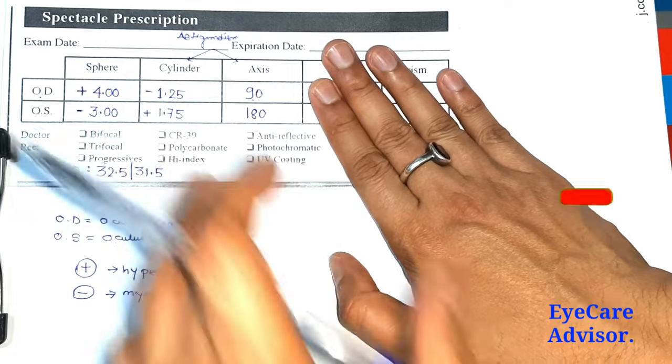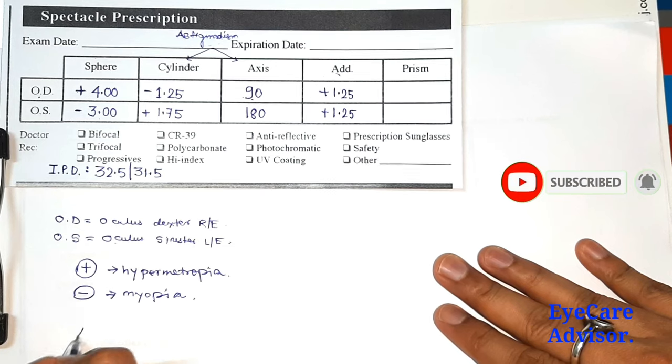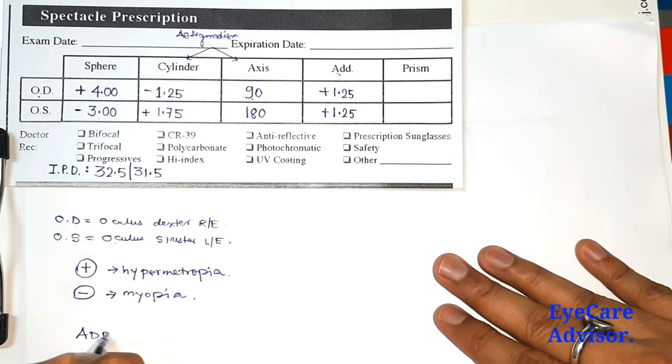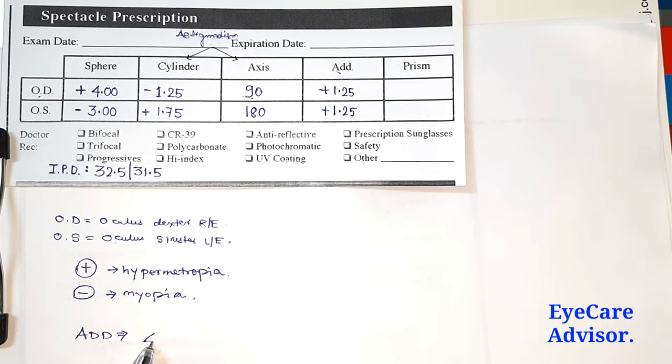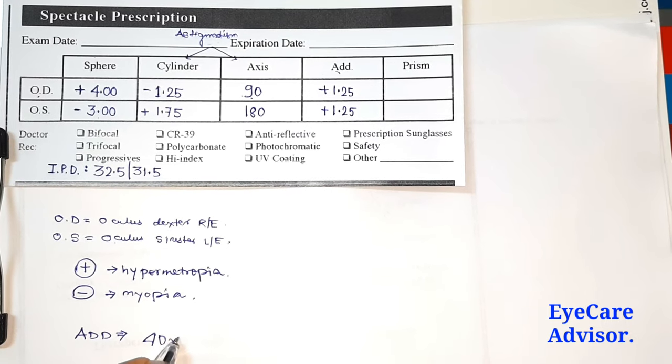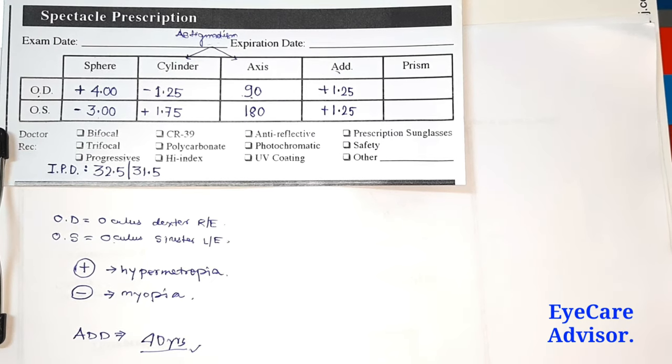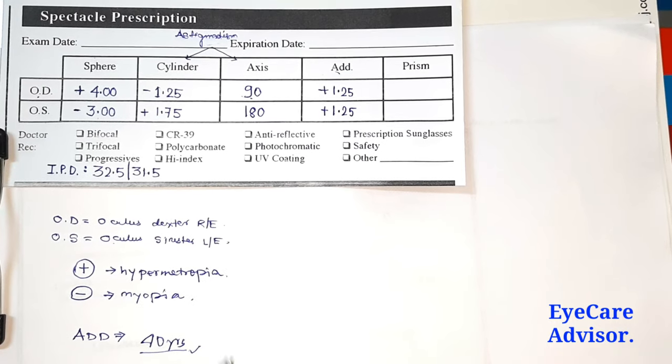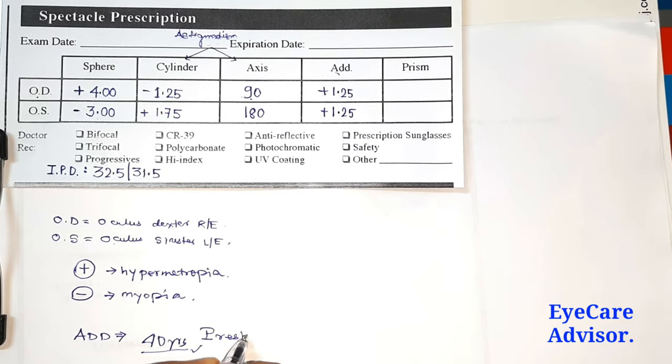Then you can see the fourth part in the column, it's the add. What does this add mean? Those who are generally above the age of 40 years, they're having some difficulties for near. For those cases, they have to put some reading prescription separately. After 40 years, this condition is known as presbyopia.